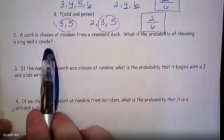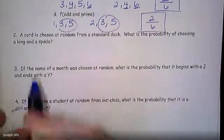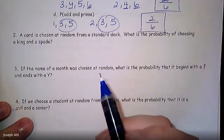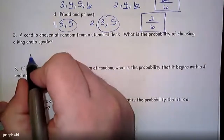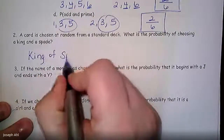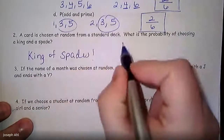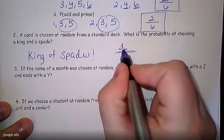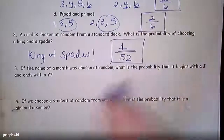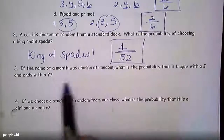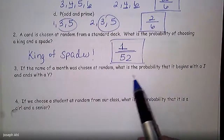For the card question — a card is chosen at random, what's the probability of choosing a king AND a spade? There's only one card in the deck that meets both criteria: the king of spades. So the probability is 1 out of 52.